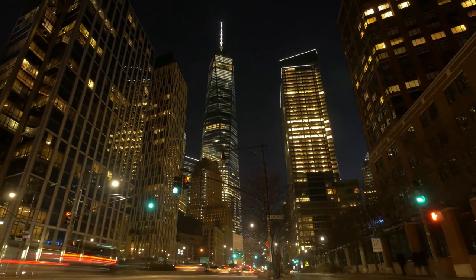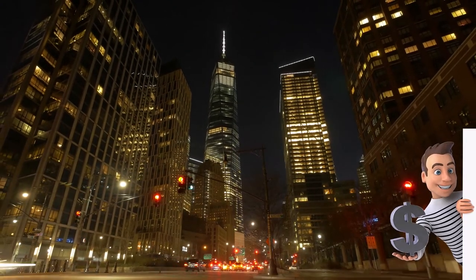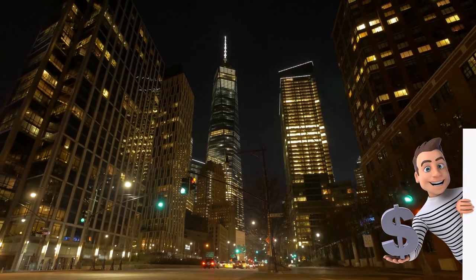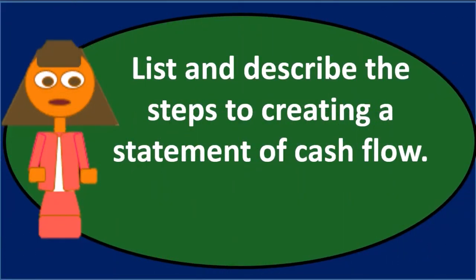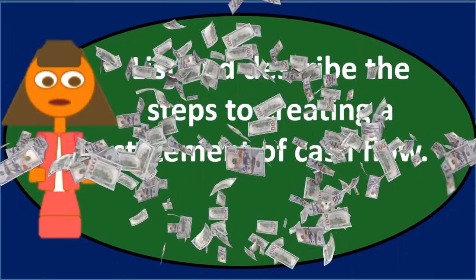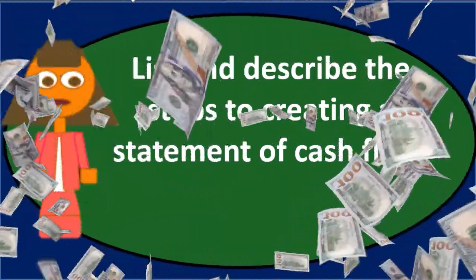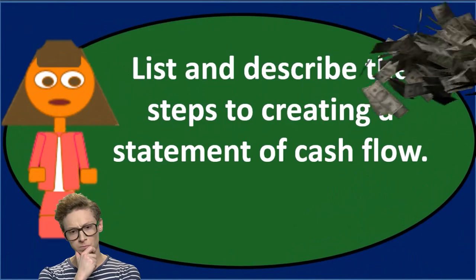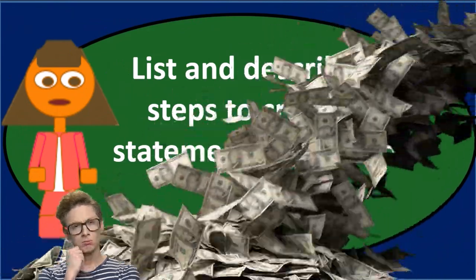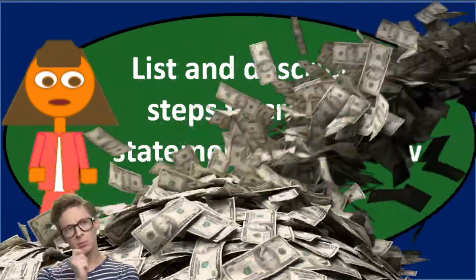Once we have the statement of cash flows created, we want to look through and see if there are any non-cash items, so that we would include a note for the statement of cash flows reporting those non-cash items. These would be things like if we purchased equipment and financed it. We want to make sure we have the notes for the non-cash items related to the statement of cash flows.